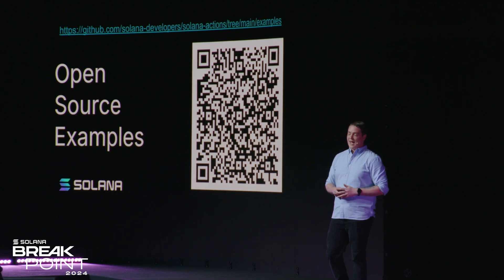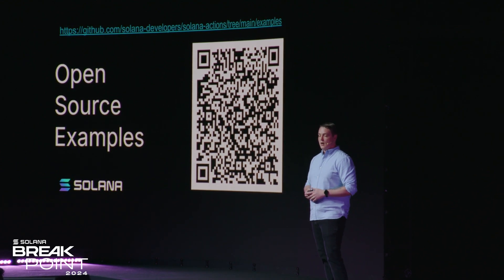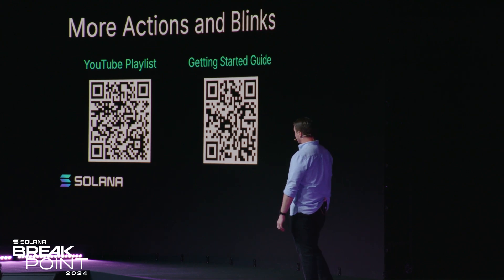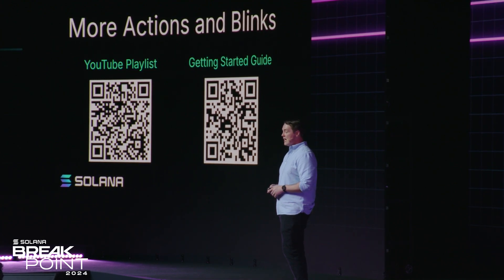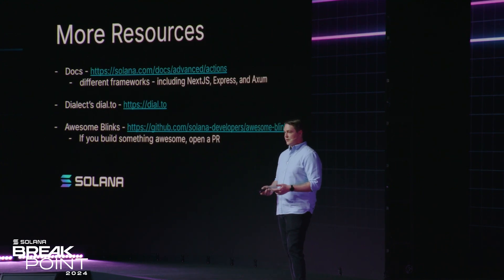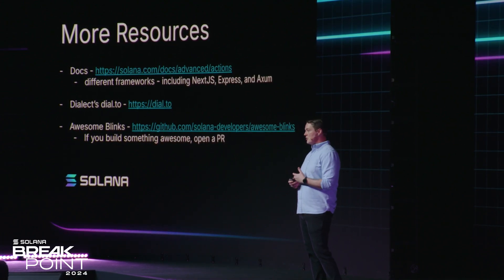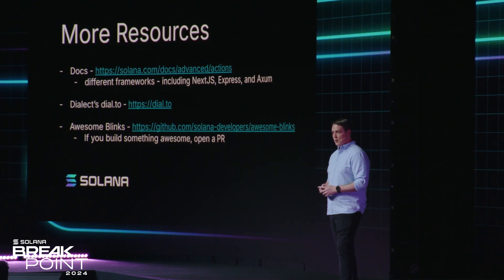That's pretty much it — it's that simple to build Actions. You can scan this QR code, which goes to the Solana Developers GitHub organization repo. There are a bunch of open-source examples, and that's where the SDK is. There's also a YouTube playlist with videos on how to do Blinks and Actions, more educational content, and a Getting Started guide in the Solana documentation. There are also tons more resources: general docs covering different frameworks — examples for Next.js, Express, and Axum. If you want to do Rust, it's just JSON; you can do it in any language or framework. Huge shout out to Dialect and all the engineering work they've done around Blinks — check out dial.to. And there's the Awesome Blinks repo — if you build an awesome Blink, open a PR, I'd love to merge it. Follow me on Twitter, and if you want to ask any questions about Blinks and Actions, DevRel, or Solana — I'm all ears. I'll be floating around, just come and talk to me. Thank you very much.